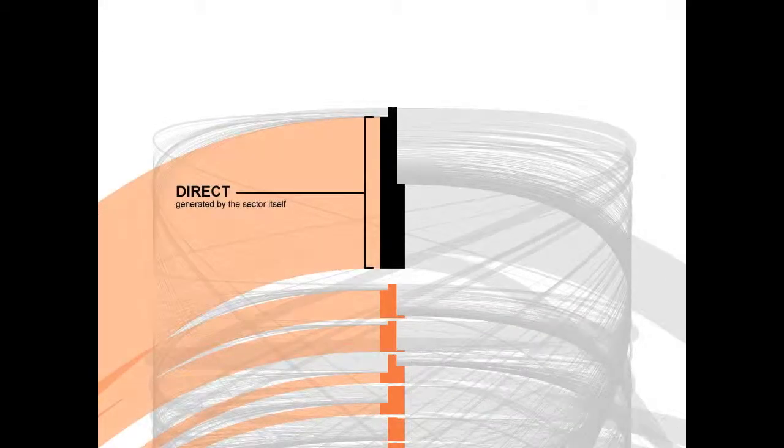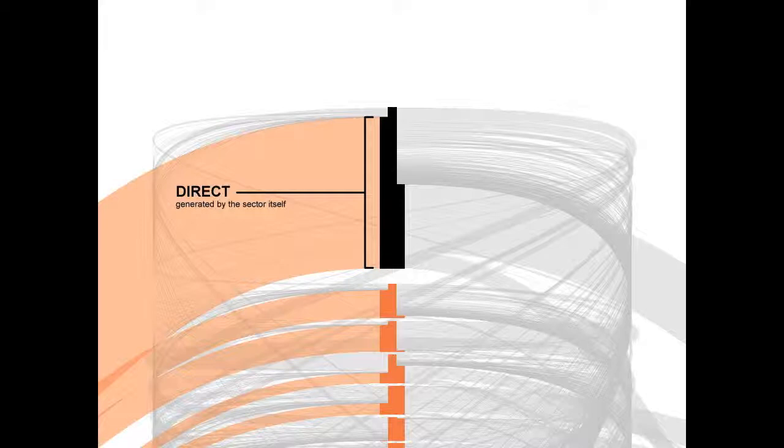On the left, the bottom part shows the direct impacts of electric services. These are the impacts that are generated by the sector itself. Not surprisingly, since electric power in the United States is mostly generated by burning coal, which creates significant greenhouse gas emissions, the electric services sector has very high direct impacts.